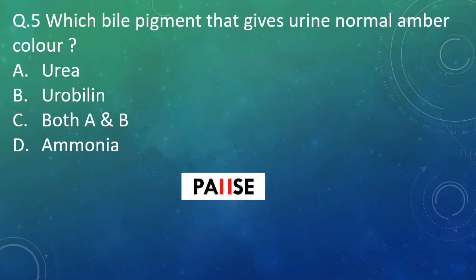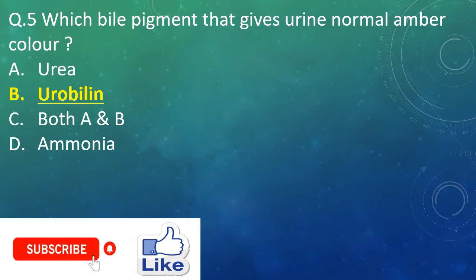Question 5: Which bile pigment gives urine its normal amber color? Option A: urea. Option B: urobilin. Option C: both A and B. Option D: ammonia. And the right answer is Option B — urobilin.